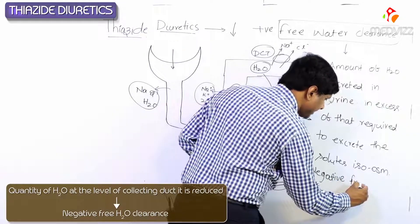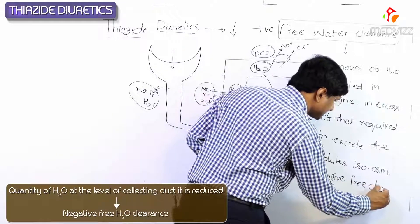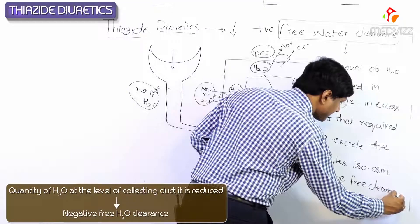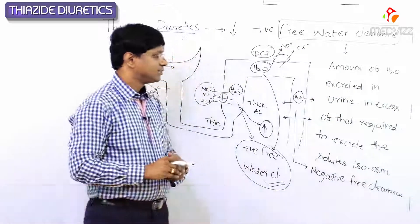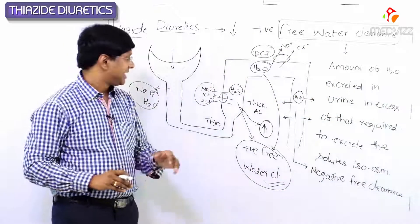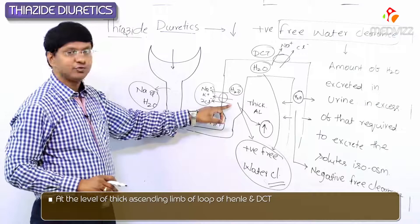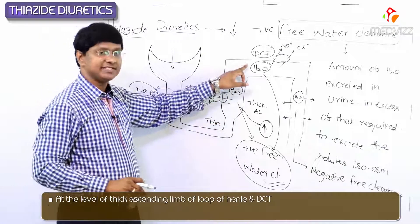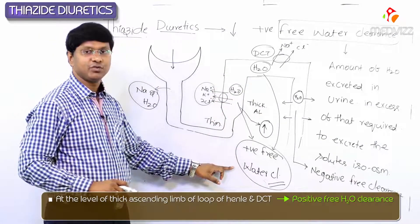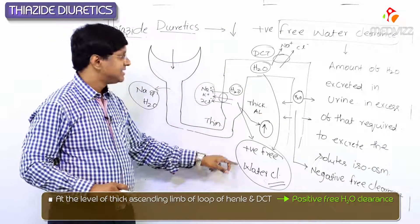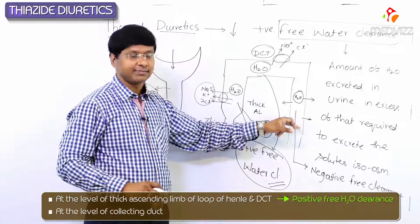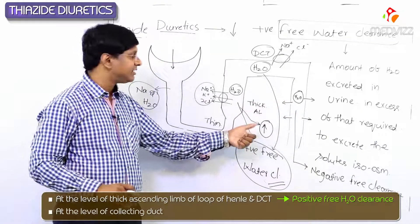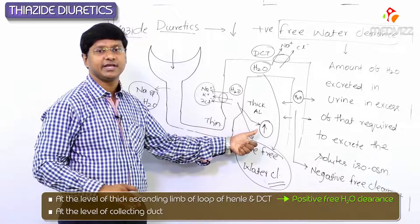So at the level of the thick ascending limb of the loop of Henle and the DCT, we have positive free water clearance, and at the level of the collecting duct, because water is reabsorbed in response to increased medullary interstitial osmolarity, there is negative free water clearance.